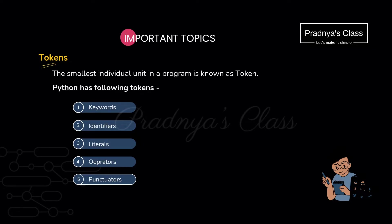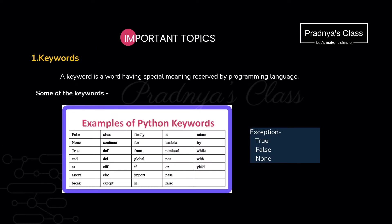The most important topic is tokens. It is the smallest individual unit of the program. To write sentences we use alphabets and some punctuation symbols. In the same way, to write a statement of the programming language we will be using tokens. The list of tokens includes keyword, identifier, literal, operators, and punctuators. You should be familiar with these four tokens very well.